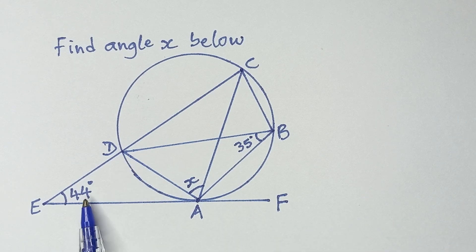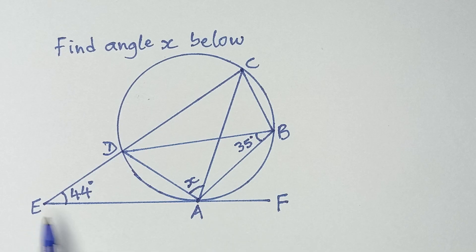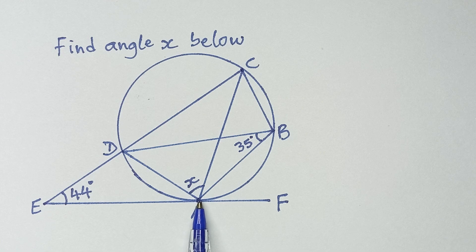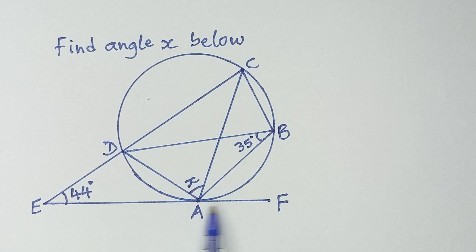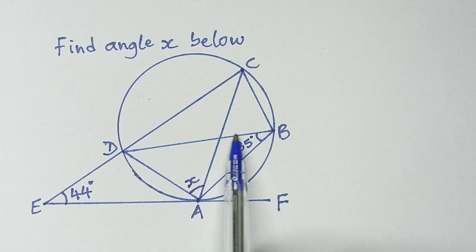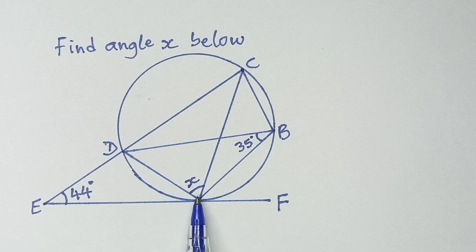We have a line EAF — this line EAF is a tangent to the circle. A tangent is an external line that touches a circle. We also have line AD as a chord in the circle. This chord AD makes an angle with the tangent line.